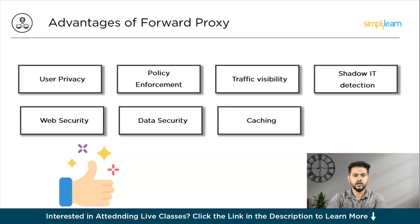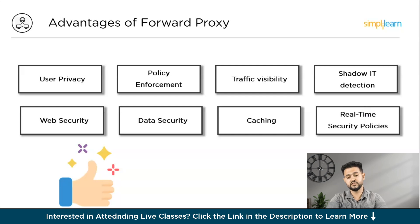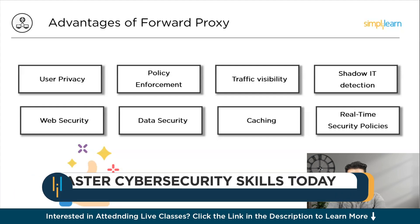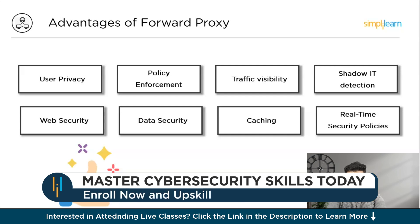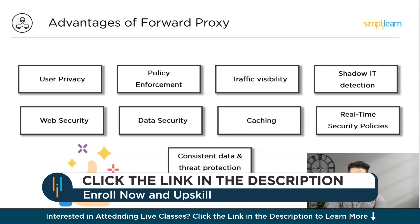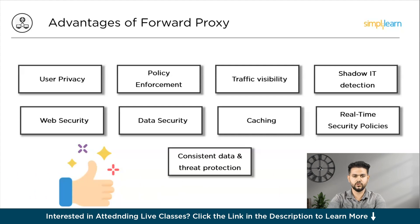Further advantages include caching: a forward proxy can cache information, optimizing processing speed for future requests. There are also real-time security policies — when paired with a cloud access security broker (CASB), a forward proxy installed as a software agent on the user device directs traffic to a cloud inspection point, where real-time security policies are applied to establish secure connections with cloud-based resources like SaaS apps and IaaS platforms. Finally, consistent data and threat protection: a cloud-based forward proxy ensures uniform data and threat protection across all cloud data channels, simplifying the application of comprehensive policies.